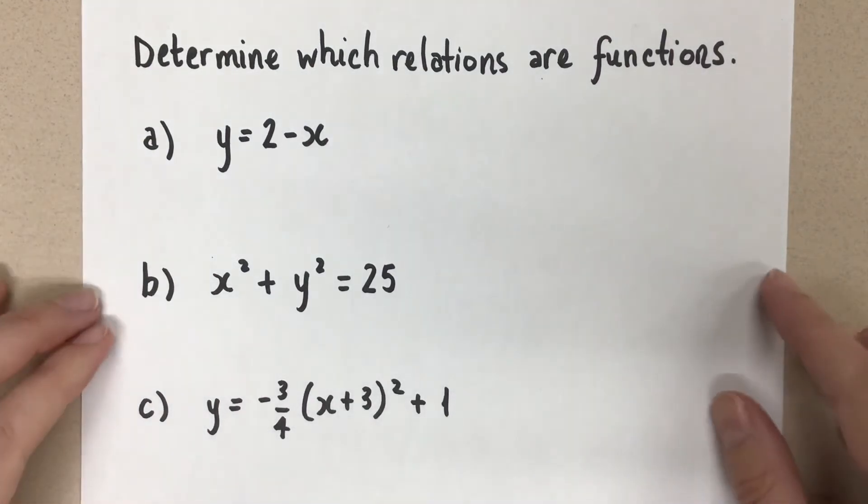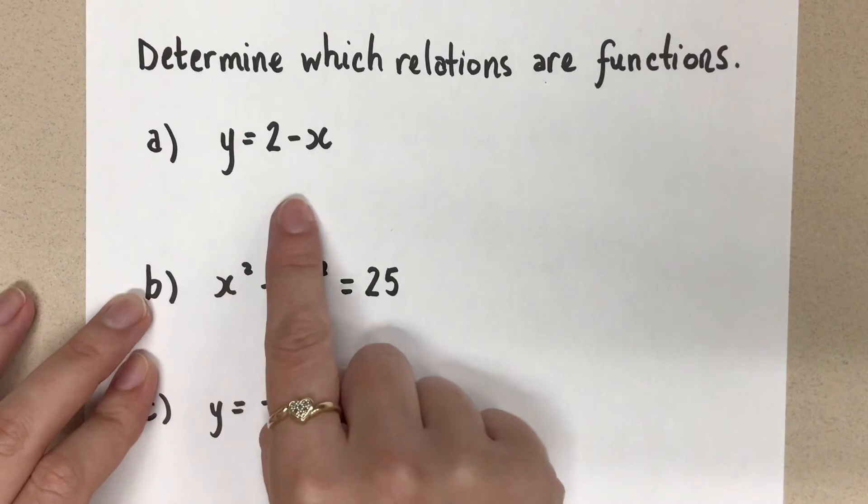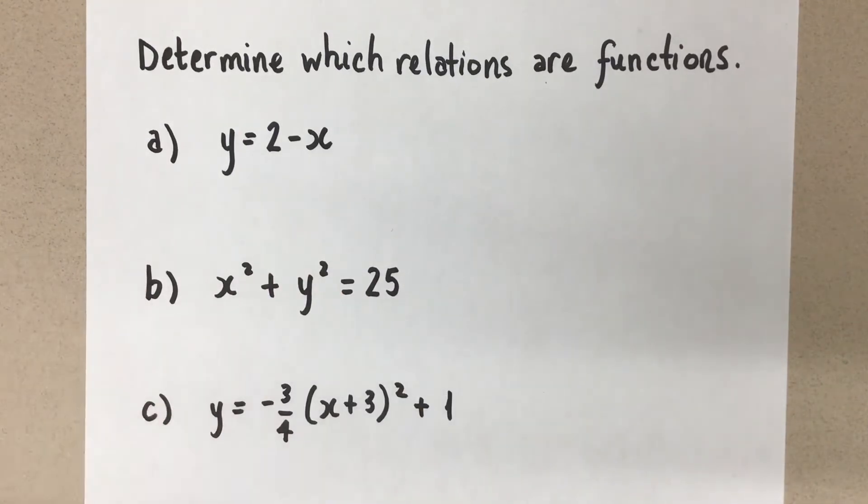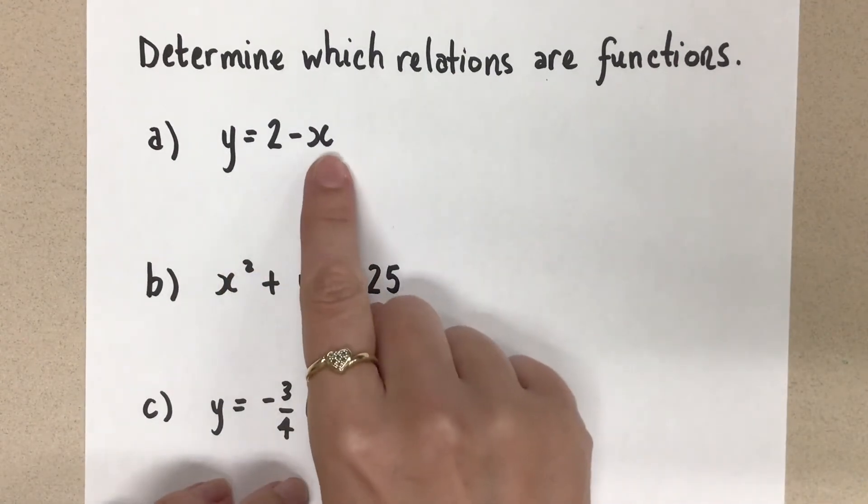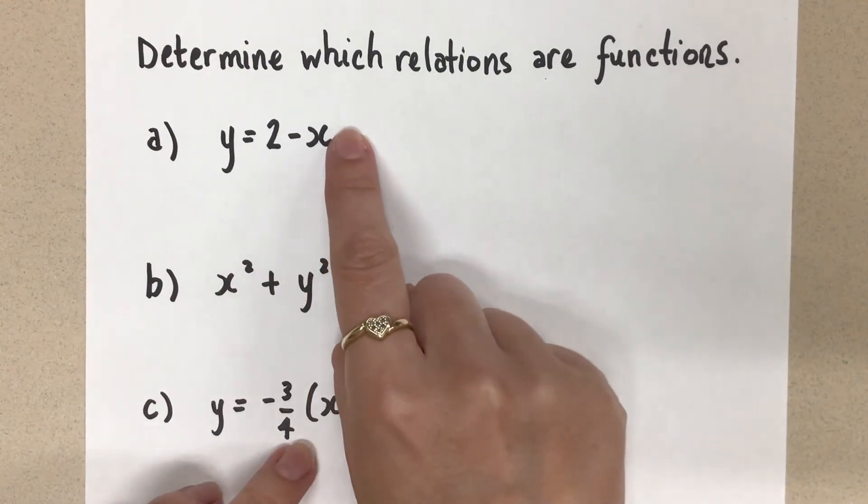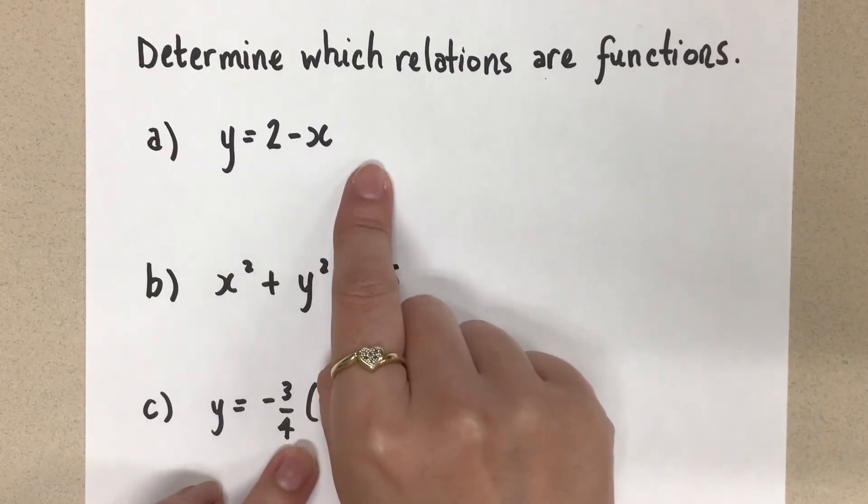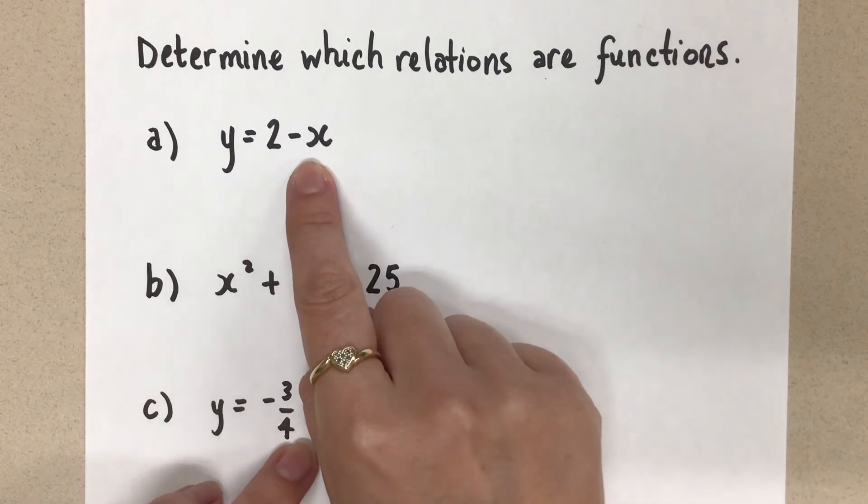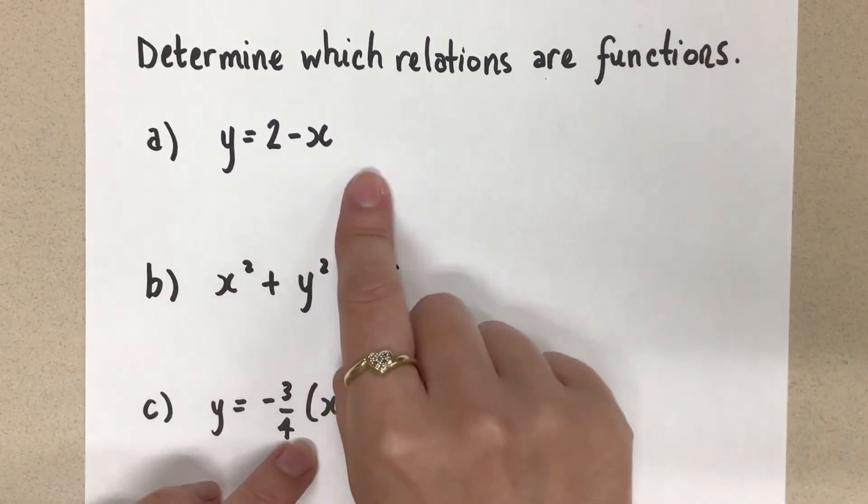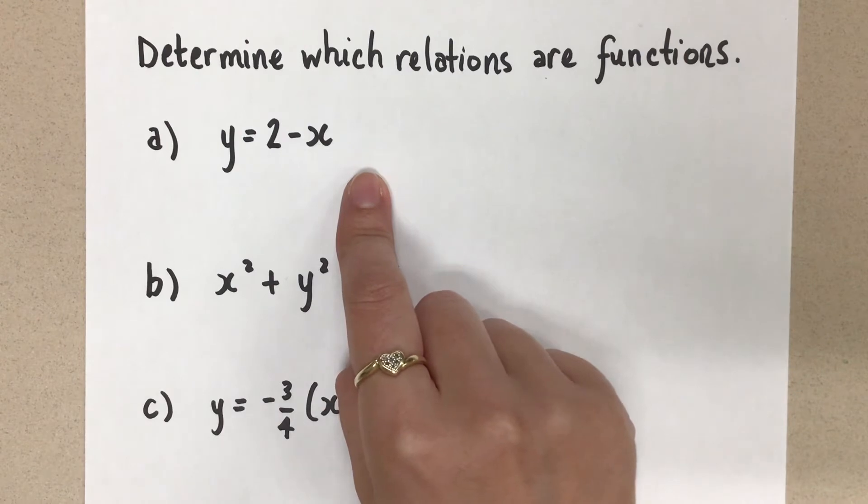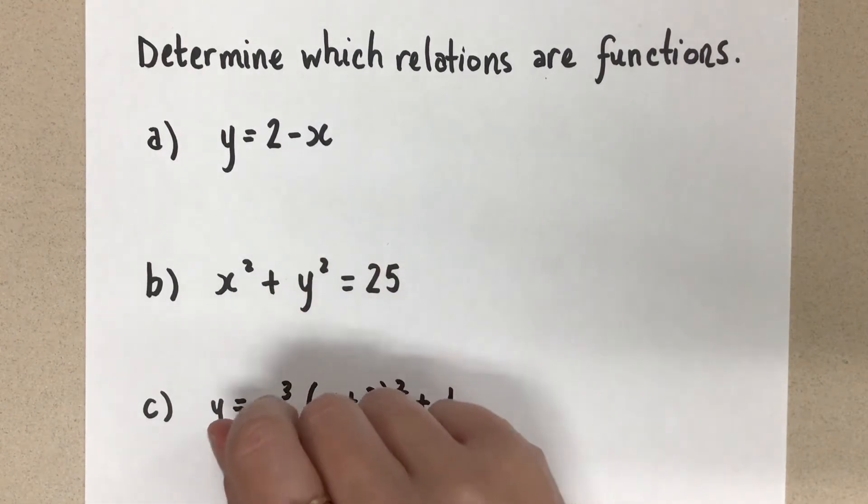So let's look at the four equations that we have here. The first one we have, y equals 2 minus x. This is the equation of a line. It is really important for us to get to the point where we can see an equation and recognize what it represents. And that will make all of our function work a little bit easier for us. So when I look at this, I know it's a line because I have an x variable here that has an exponent of 1. You can also think of this as a line with a y-intercept of 2 and a slope of negative 1. Regardless of how you want to look at this, a line, as long as it's not a vertical line, is always a function because a line is always going to pass the vertical line test.